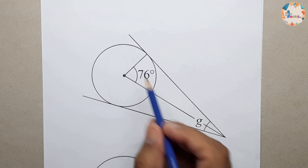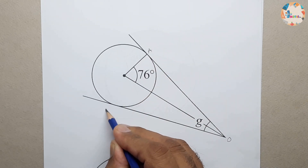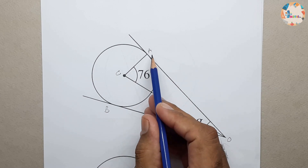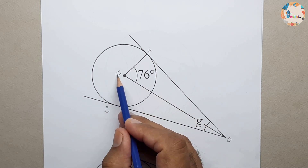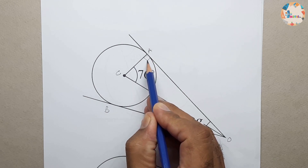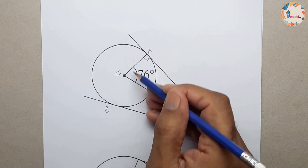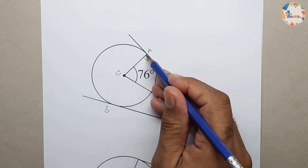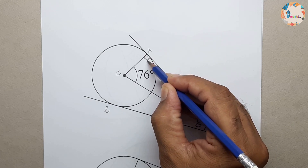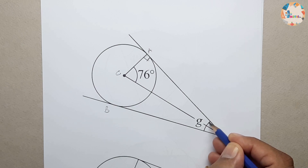Consider this diagram with points O, A, B and centre C. In triangle OAC, this angle is 90 degrees. Why? Because this is the tangent and this is the radius, and the radius and tangent to a circle make an angle of 90 degrees. So this will be 90 degrees and we have to find this complete angle.